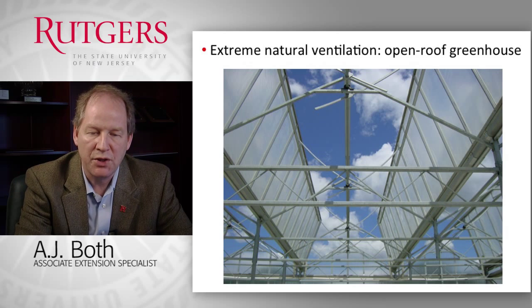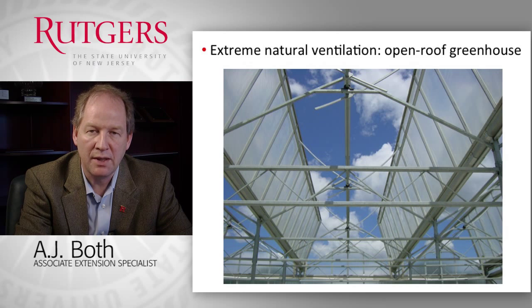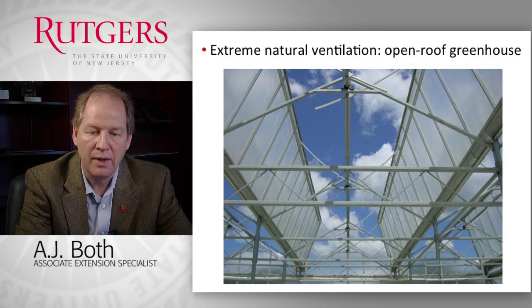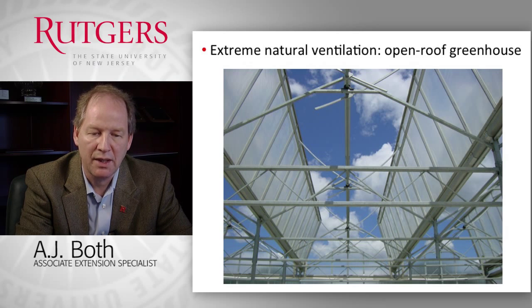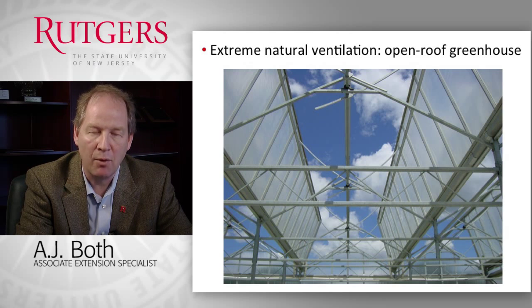An extreme case of natural ventilation is the open roof greenhouse, where the entire roof opens up, allowing for lots of air exchange between the inside and the outside. As a result, we see temperatures inside the greenhouse that are virtually identical to outside temperatures — which is very difficult to achieve with traditional naturally or mechanically ventilated structures. With this extreme ventilation option, by basically opening up the entire roof, we have a lot of air exchange and are able to accomplish virtually identical temperatures inside and outside.